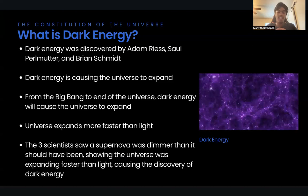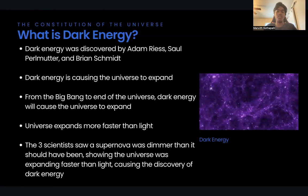Dark energy was discovered in 1998 by American astronomer Adam Riess and Saul Perlmutter, and Australian astronomer Brian Schmidt, using eight telescopes from the Keck Observatory and the MMT Observatory. They looked at a Type 1A supernova that occurred when the universe was two-thirds of its present size, and saw that the luminosity of the supernova was fainter compared to a universe without dark energy. One theory is that dark energy is a property of space itself, so as more space is created, there is more dark energy causing the universe to expand faster and faster. Another theory is that it comes from quantum theory, where empty space is filled with virtual particles that continually form and disappear, giving off enough energy to act as dark energy.